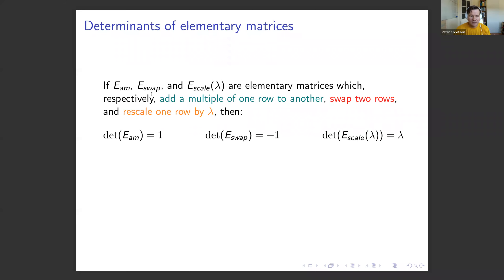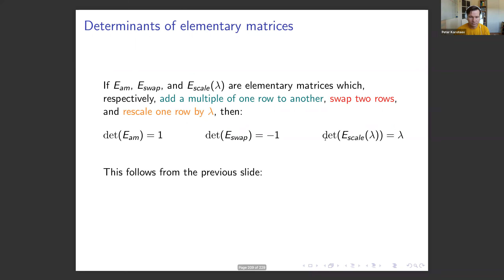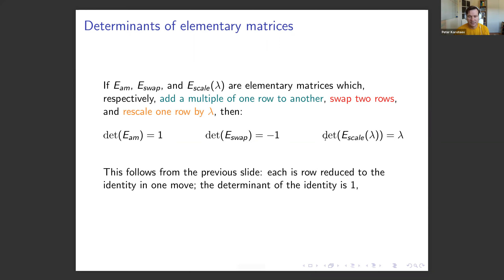The elementary matrices that manifest row reduction have known determinants. If E_add, E_swap, and E_scale(lambda) are elementary matrices for adding a multiple of one row to another, swapping rows, and rescaling by lambda respectively, then: det(E_add) equals 1, det(E_swap) equals negative 1, and det(E_scale) equals lambda. Each is row-reduced to the identity in one move, with determinant 1, and the effect of that move is as discussed. If M is any square matrix, the determinant of a product of elementary matrices times M equals the product of their determinants.